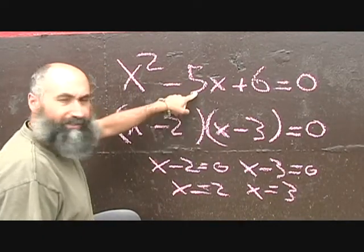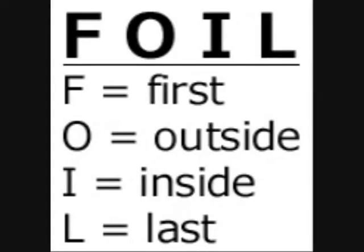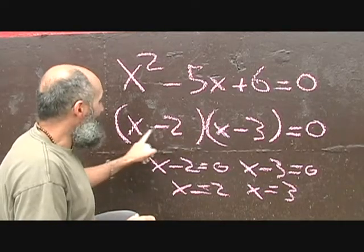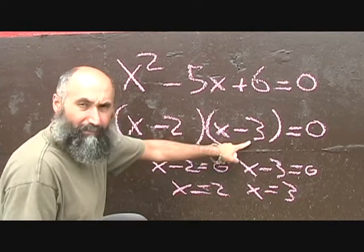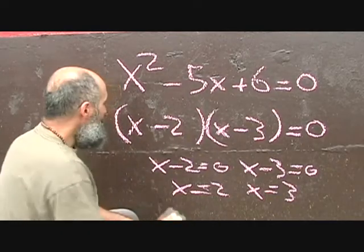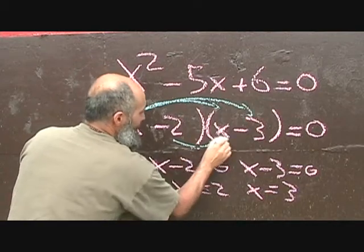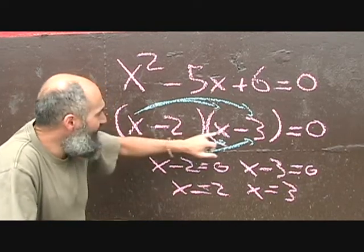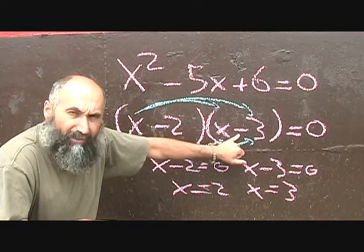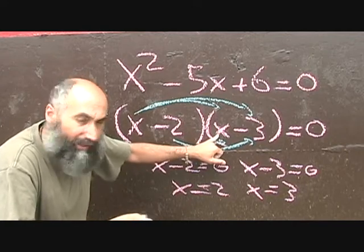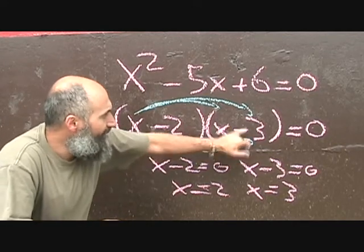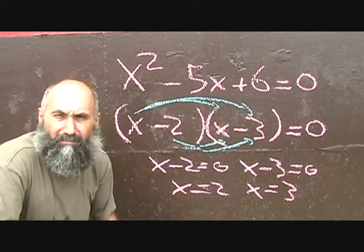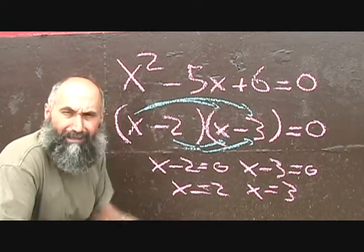If you want to go from the factored form back to the original, you use FOIL — First, Outside, Inside, Last. I prefer to do it visually: x times x is x squared, x times negative 3 is negative 3x, negative 2 times x is negative 2x, and negative 2 times negative 3 is 6. Negative 3x plus negative 2x gives you negative 5x, taking you back to the original equation.